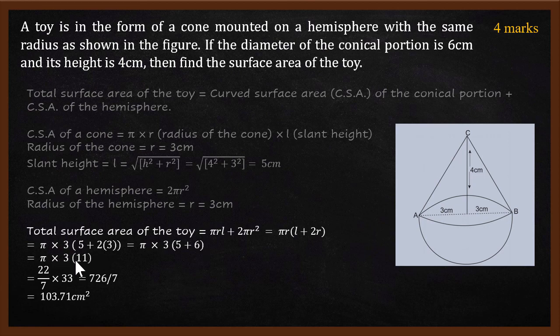So π times 33. Taking π as 22/7, 22/7 multiplied by 33, if you simplify, you get 726 divided by 7, which if you further simplify, you get 103.71 cm².